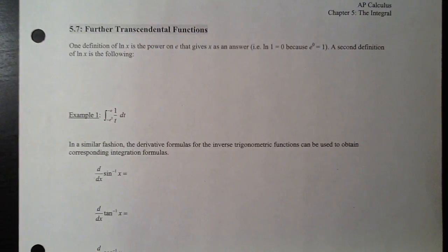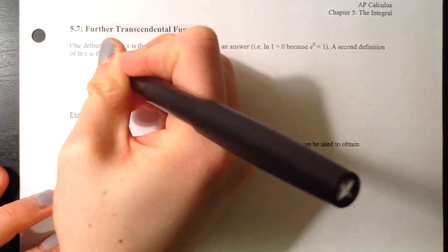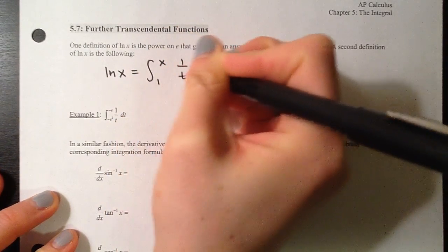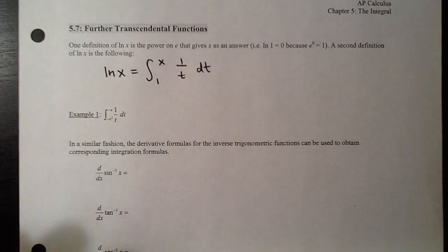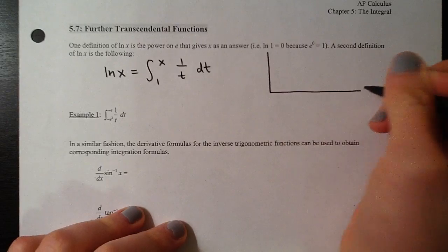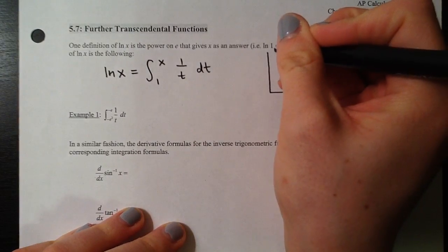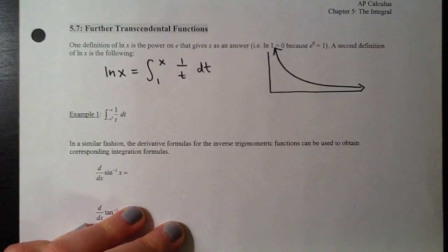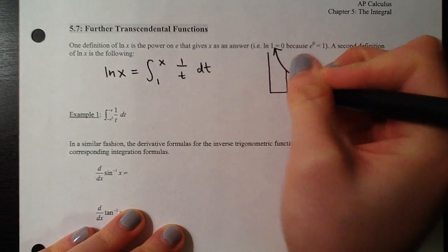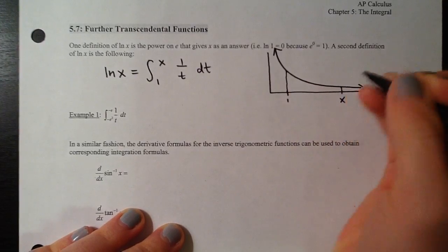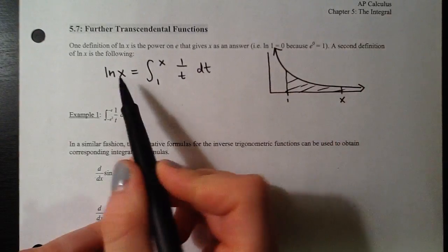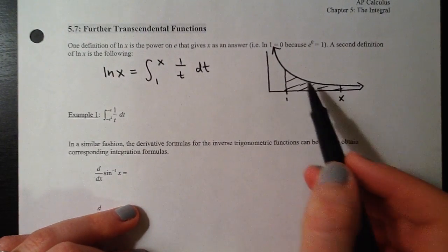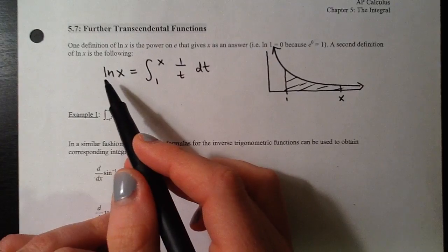A second definition is a calculus-based definition: natural log of X is defined as the integral starting at 1 and ending at X of 1 over T. Remember our interpretation of an integral is the area under a curve. So 1 over T looks something like a piece of a rational function with vertical and horizontal asymptotes. Starting at 1 and ending at X, natural log of X gives the area highlighted from 1 to X. The area from 1 to 1 would be 0, and from 1 to E it would be the natural log of E, which is 1.